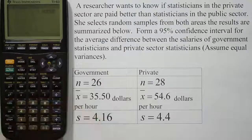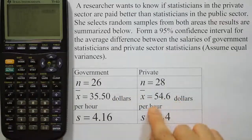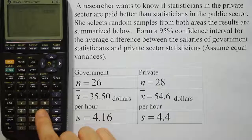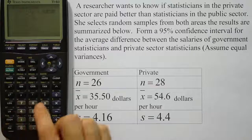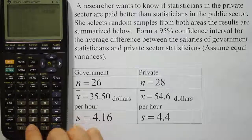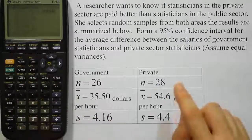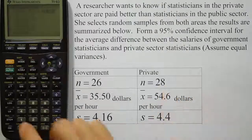And then scroll down to where it says x̄₂, that's 54.6. Then down to where it says standard deviation, that's 4.4. Then finally the second sample size, which is 28.